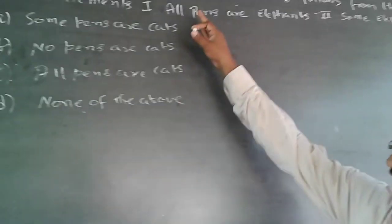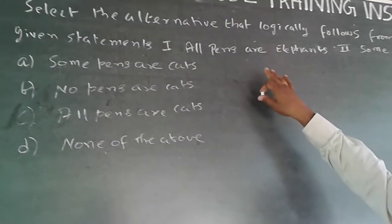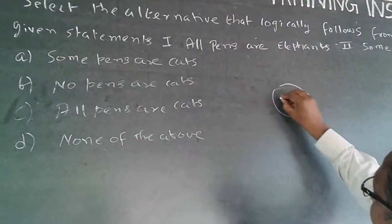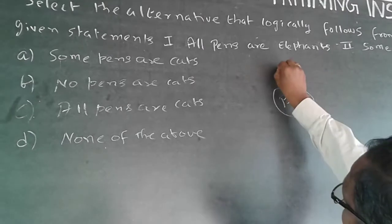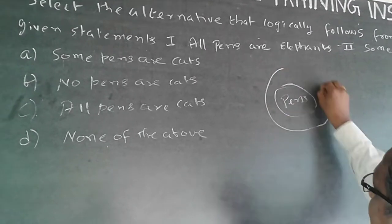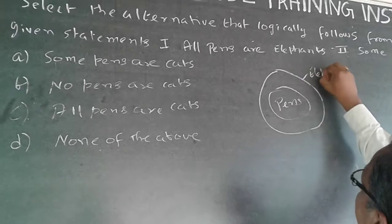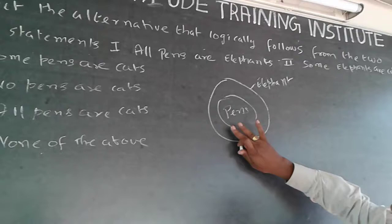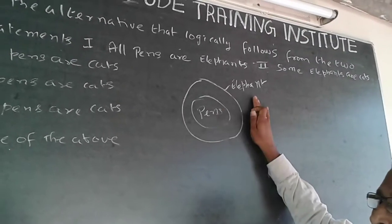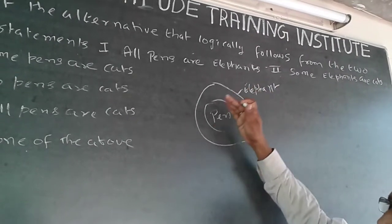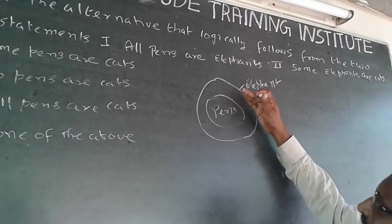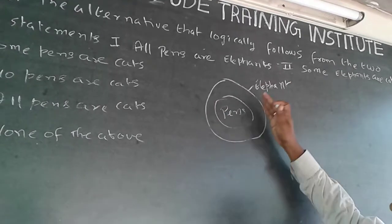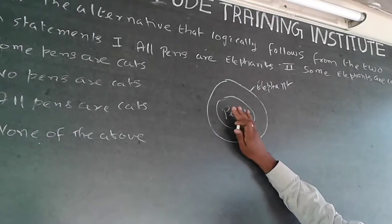So here, what it says is all pens are elephants. These are all pens — all pens are elephants — so pens will become a subset of elephants. When pens become a subset of elephants, I can definitely say all pens are elephants, but I cannot say all elephants are pens. However, I can say some elephants are pens. So 'all pens are elephants, some elephants are pens' is definitely possible.